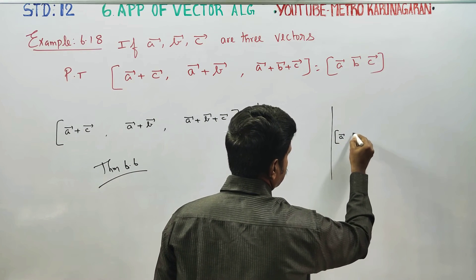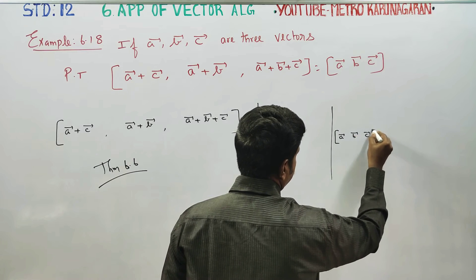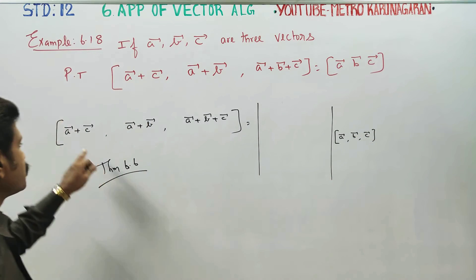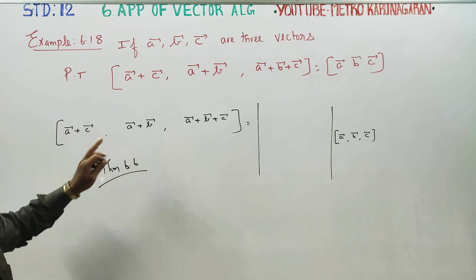First, determinant. ABC is the common group. The components are the coefficients. ABC is the components.